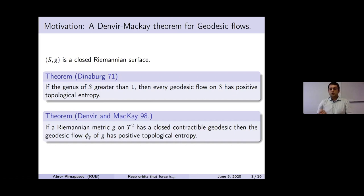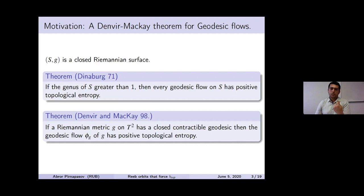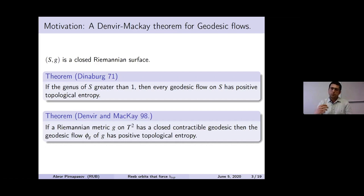If you take this closed contractible geodesic and lift it to the unit tangent bundle, you will get two periodic orbits: one in the positive orientation direction and one in the negative orientation direction. We see that these two periodic orbits force topological entropy.